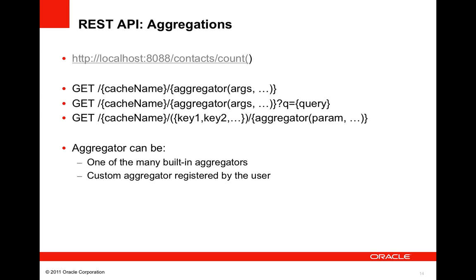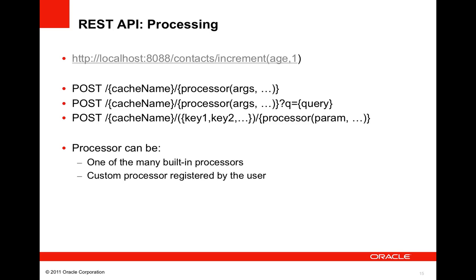The Coherence REST API allows you to leverage the data grid features of Coherence to perform complex aggregation and parallel processing. An aggregation request URL consists of the target cache name followed by an aggregator name and optional parameters. More complex requests can restrict the aggregation to a subset of cache entries by specifying a query or set of keys. You can use any aggregators included with Coherence or custom aggregators. Similarly, a processing request URL consists of the cache name followed by a processor name and optional parameters, and you can restrict processing to a subset of entries using any built-in or custom processor.